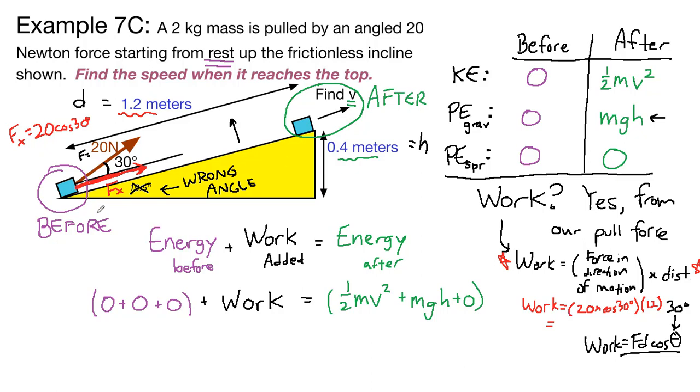With the work term, we have the 20 cosine 30 degrees times the 1.2. And then we can plug in the right side. We have one-half times the mass is 2 kilograms times V squared. V is our unknown plus 2 times 9.8 times the height, 0.4 meters. On the left, our work term, we can plug that into our calculators. We get 20.8 equals, then one-half times 2 is 1, we get V squared, and then this term in our calculators is 7.84.